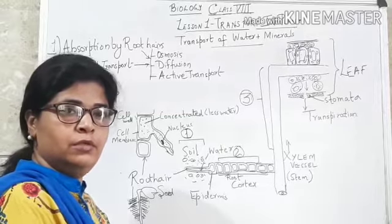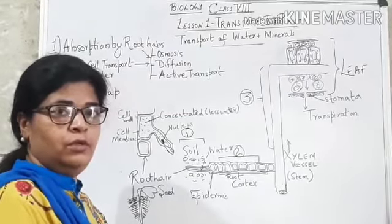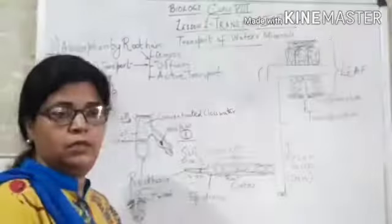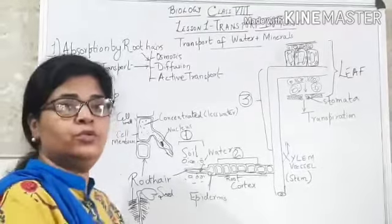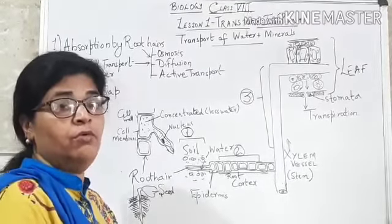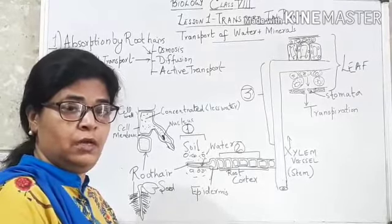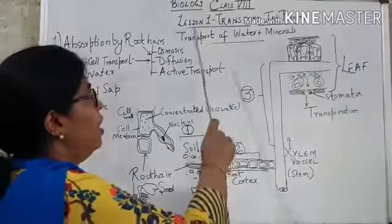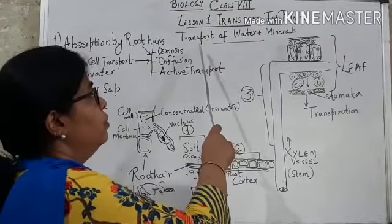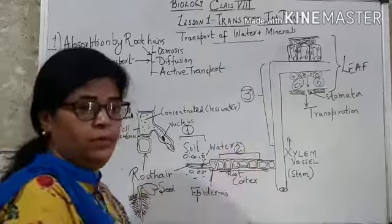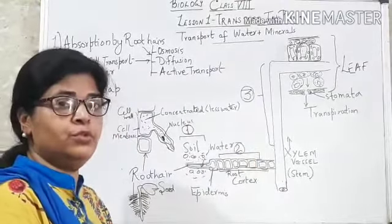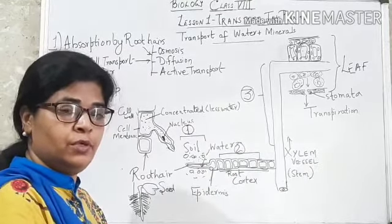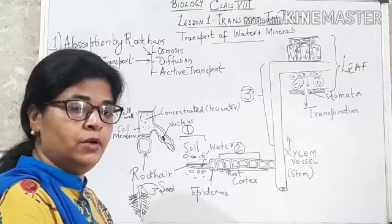Good morning Class 8 students. Welcome to your second session of biology on Lesson 1: Transporting Plants. Last time you studied about the structure of conducting tissues in plants — xylem and phloem. Today we are going to move ahead. We will learn how xylem and phloem play a role in transporting water and minerals, especially xylem, which is concerned with the upward movement of water and minerals as well as their absorption from the soil.